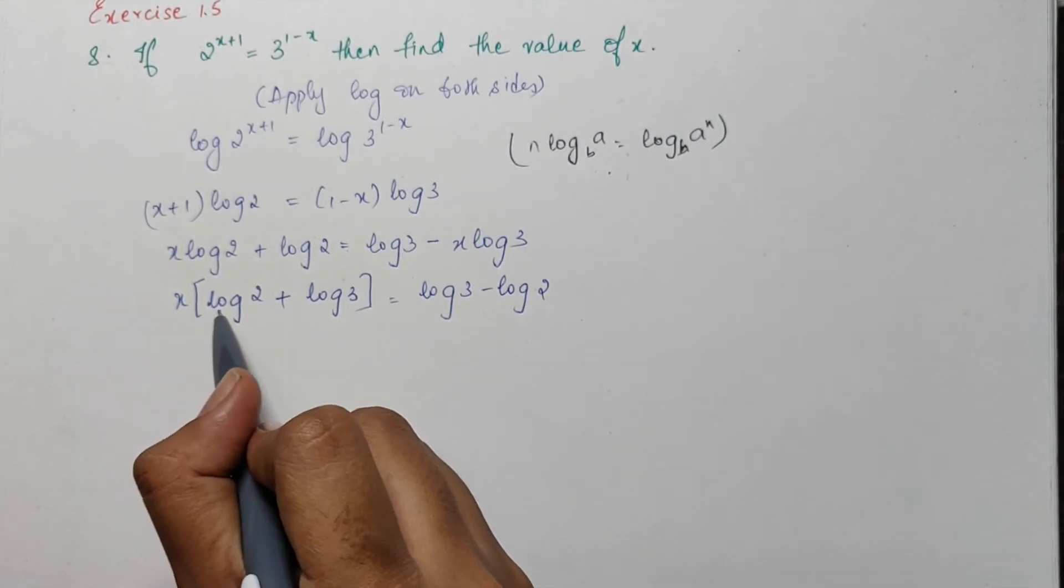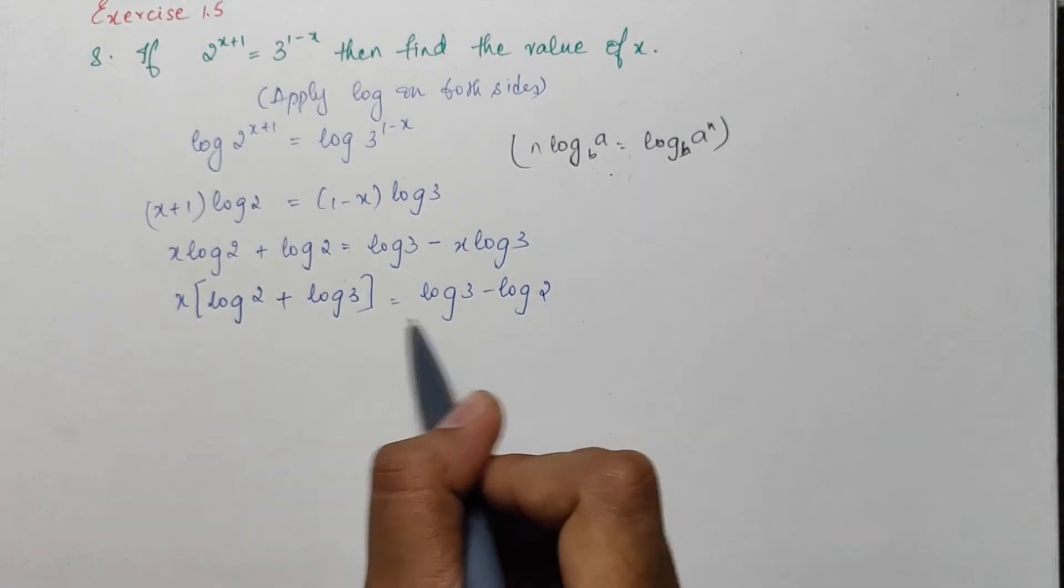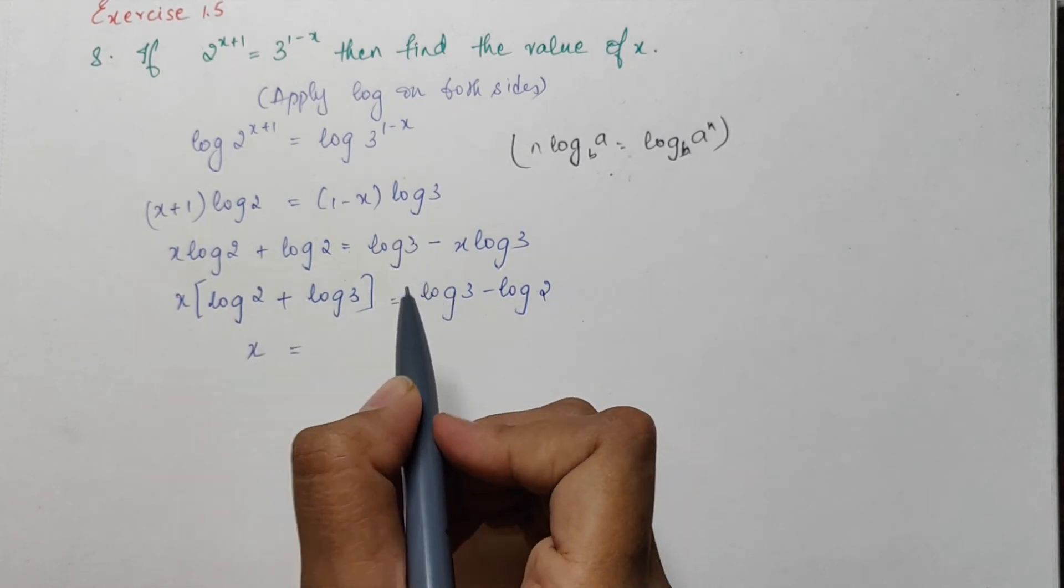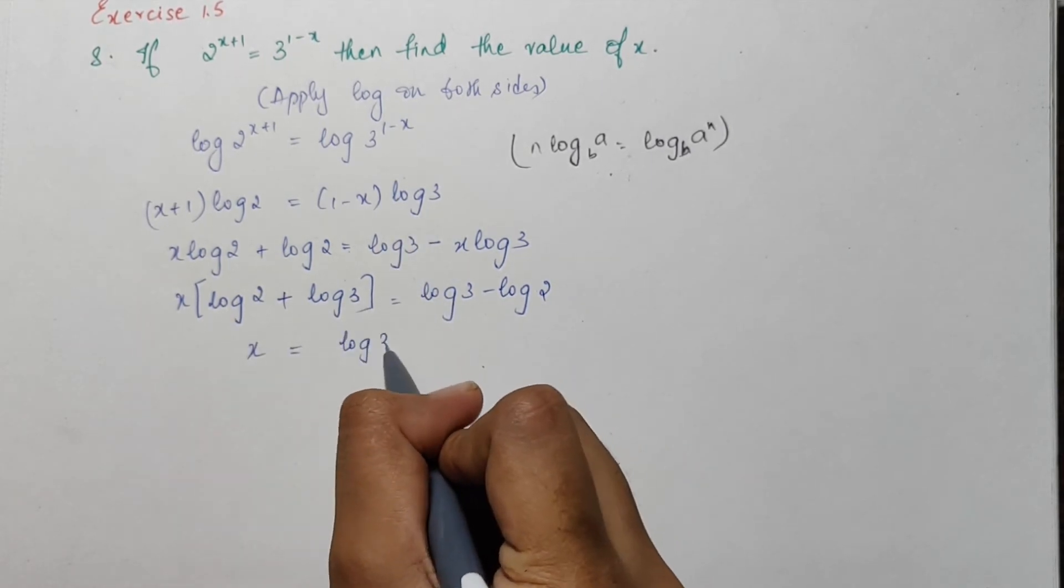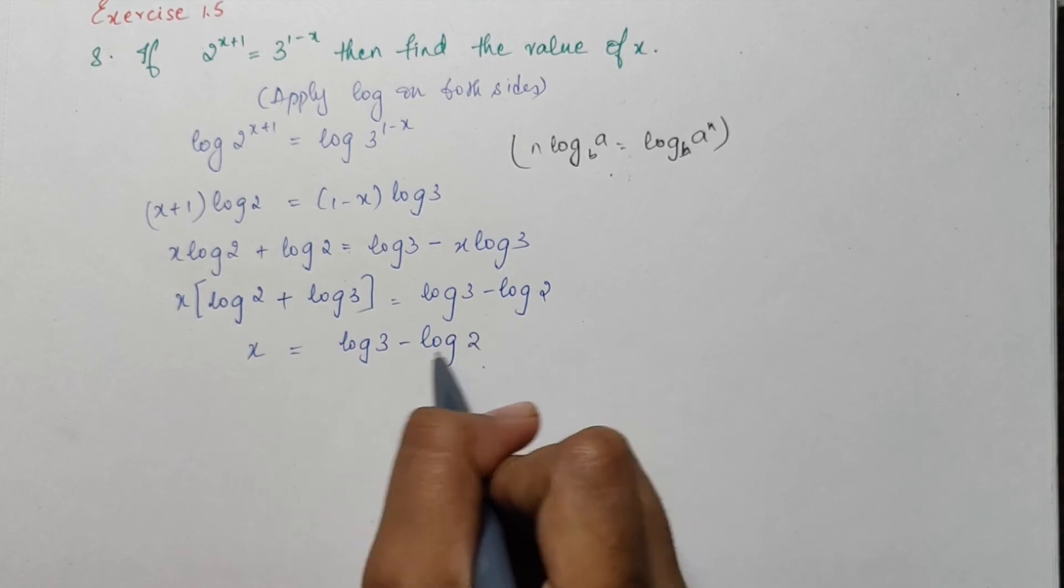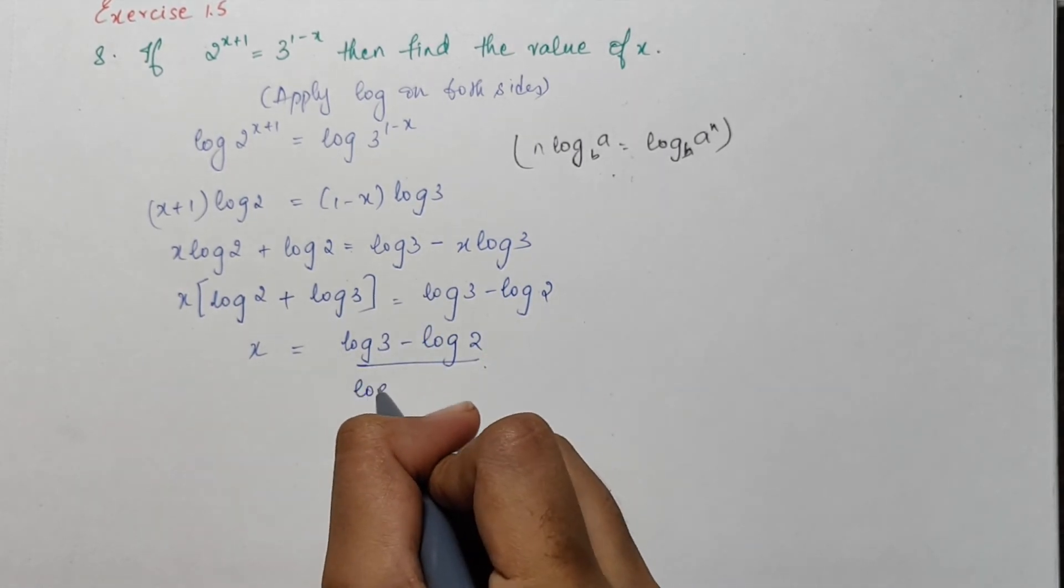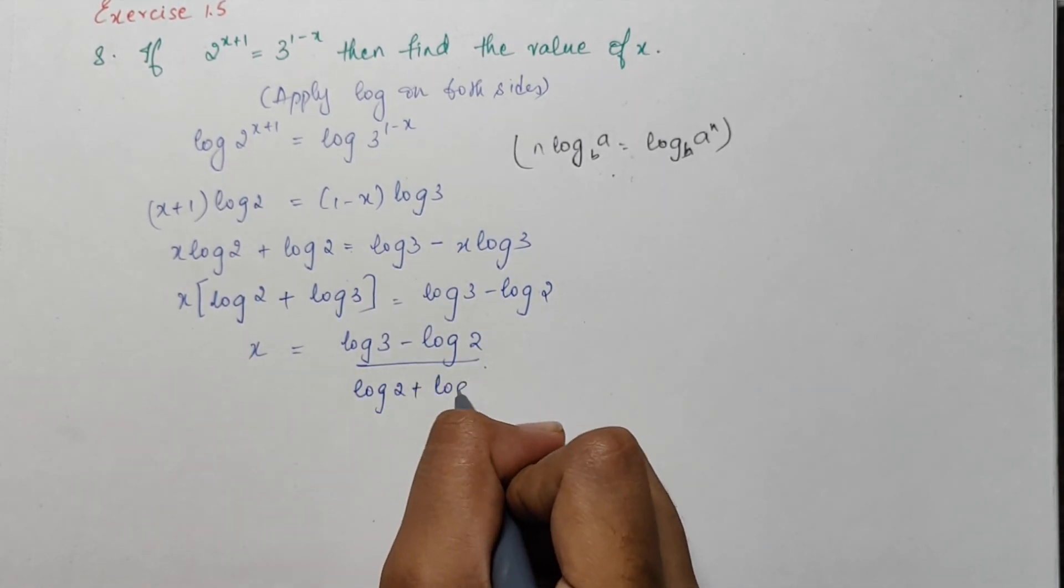So if I send this log 2 plus log 3 on to the right hand side I would have final answer is x equal to log 3 minus log 2 divided by log 2 plus log 3.